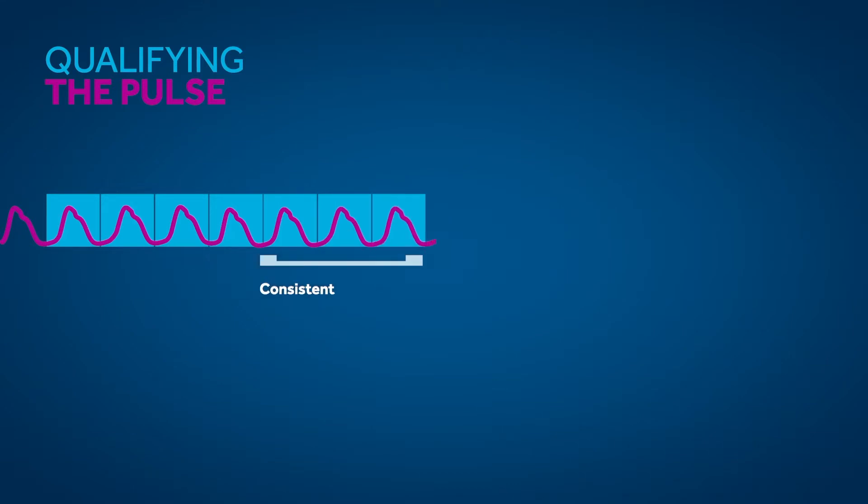Signal segments that are inconsistent are given lower priority in the averaging. This can reduce the influence of random interference such as motion.